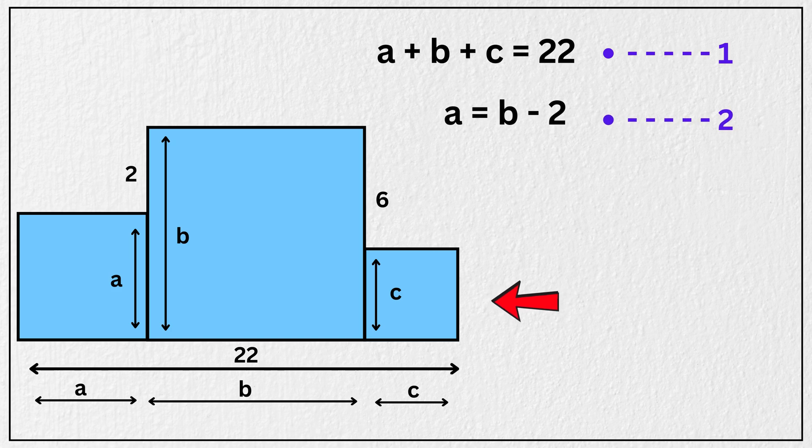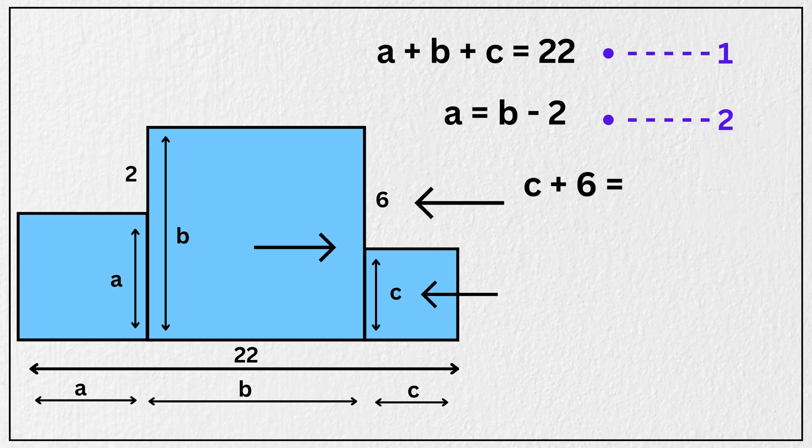Now let's look at this square on the right. Its side length is C. And from the diagram, we see that C plus 6 is equal to B. And subtracting 6 from both sides, we get that C is equal to B minus 6. Let's call this equation 3.